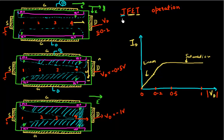We began our analysis of this JFET device, or Junction Field Effect Transistor, in the last video. We reasoned how the IV characteristics, which look very similar to a MOSFET, arise from this device. You get a linear region and you get a saturation region, and we reasoned why this happened.